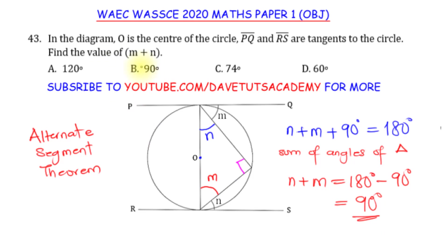Looking at our options, that is option B — 90 degrees. It's the understanding of the circle theorems that will help us know what will be easiest for us to use, and give us the least difficulty in arriving at our answer.